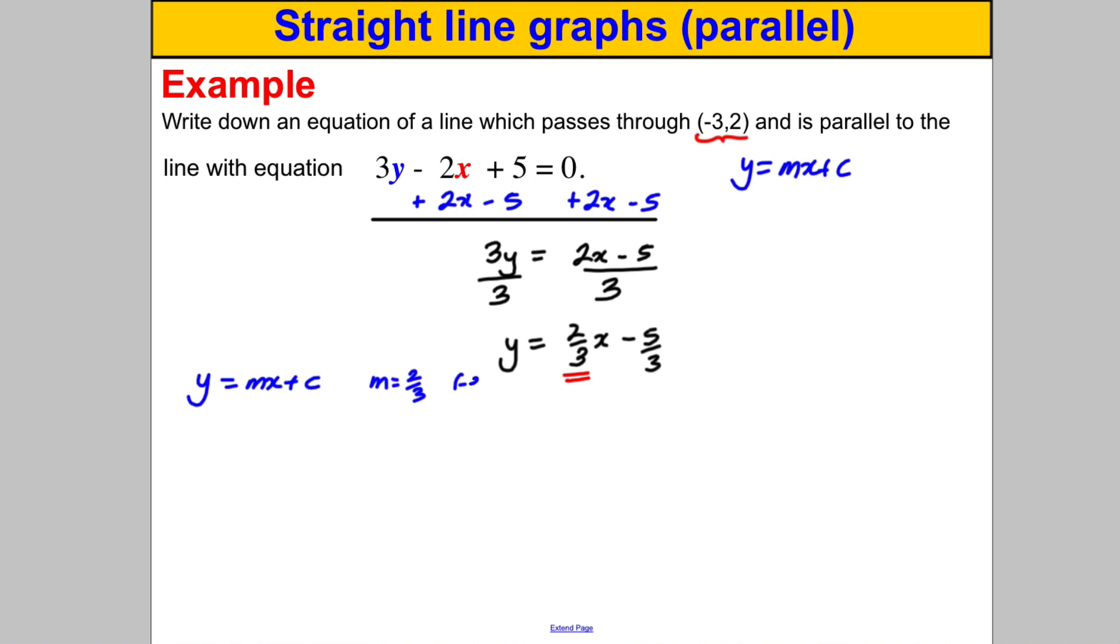So substituting in M is 2 thirds, Y is 2 thirds x add C. Now we're going to substitute in the -3 and 2 which we want on this line, so we're going to say therefore that 2 is equal to 2 thirds multiplied by negative 3 and C.